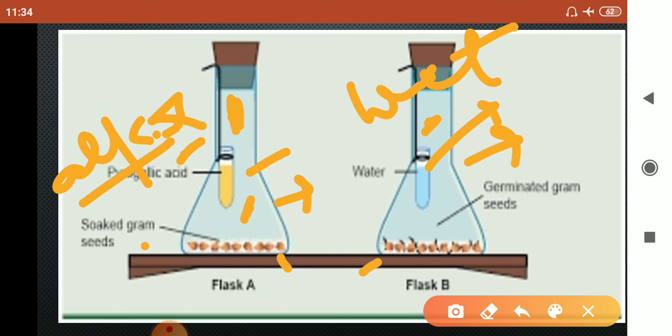Where the oxygen is absorbed, the seeds will not be able to germinate because they will not be able to get oxygen. What happens in the other flask? The seeds will germinate. This experiment proves that oxygen is necessary for germination.